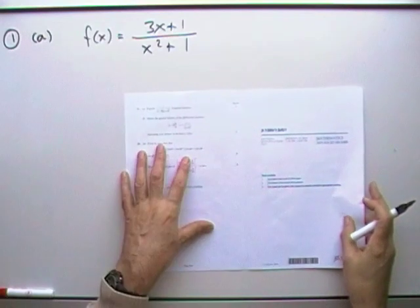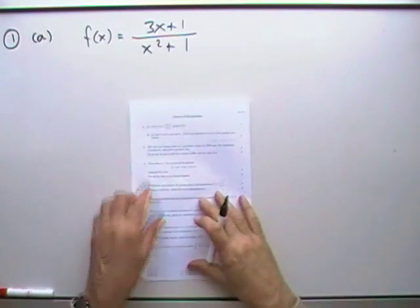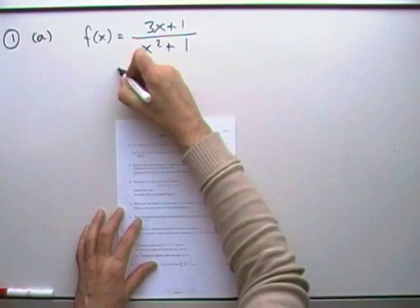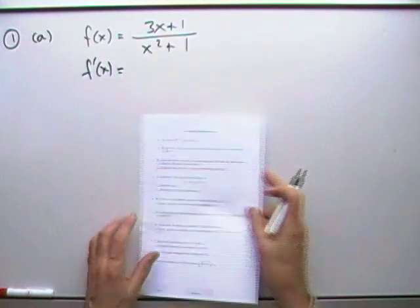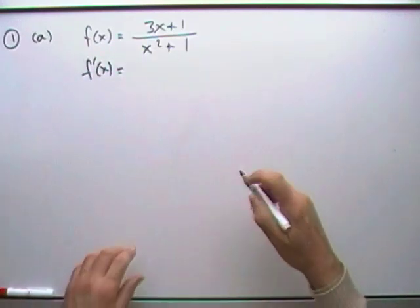The 2012 Advanced Higher paper then. Question 1, differentiation. First part, differentiate this quotient. If you wish, turn it into a product rule if you want.